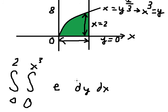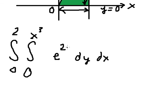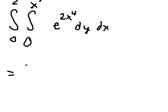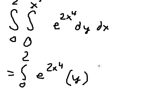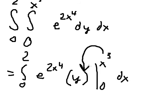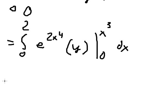Now we put the function in. We need to calculate this integral. The integration with respect to dy gives us y, so we apply the bounds from 0 to x cubed and multiply by dx. Substituting, we get x cubed minus 0, giving us x cubed.